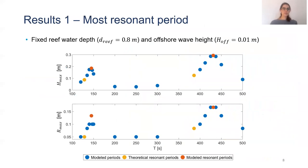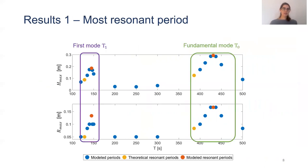For stationary results, here you can see the maximum wave height and the maximum run-up R_max as a function of the periods. We modeled this for an offshore condition of one centimeter. You can see that two peaks are formed: the first mode T1 and the fundamental mode T0. It's important to notice that the wave height and the run-up behave similarly, and also that the fundamental mode amplifies more than the first mode. Therefore, from now on we're going to focus on the fundamental mode and the wave height H_max.